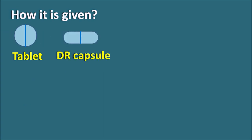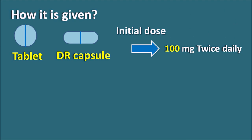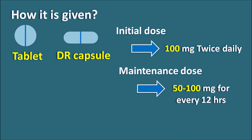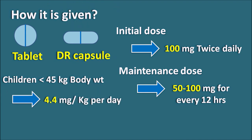Doxycycline is available as a tablet form and as delayed-release capsule form. The initial dose is 100 mg twice daily (total 200 mg per day: 100 mg in the morning and 100 mg at night). The maintenance dose is reduced to 50–100 mg given every 12 hours. In children greater than eight years with body weight less than 45 kg, the initial dose is 4.4 mg/kg divided into two daily doses, and the maintenance dose is reduced by 50% to 2.2 mg/kg per day in divided doses.